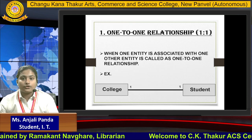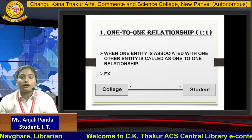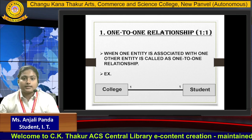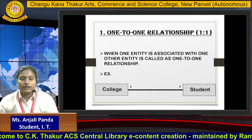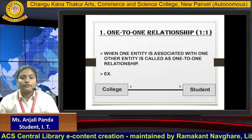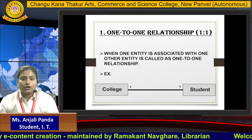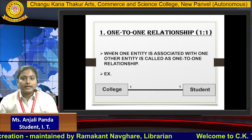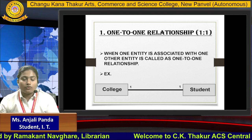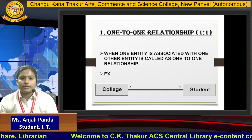First is one-to-one relationship. When one entity is only associated with another one entity, it is called a one-to-one relationship. For example, I have taken a college and a student — a student has only one relationship with a college. We can also take the example of college and department: a college has only one department connection; they are associated with each other.